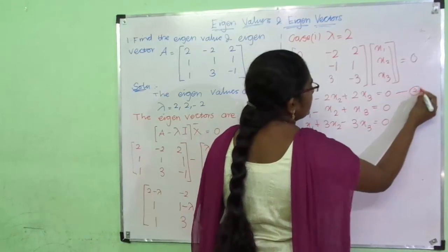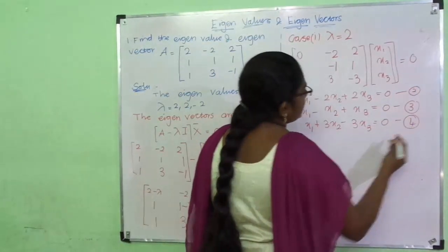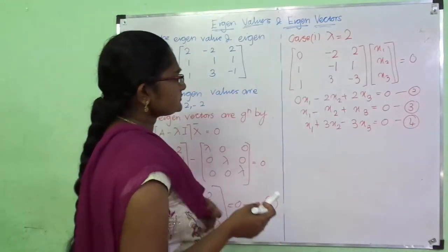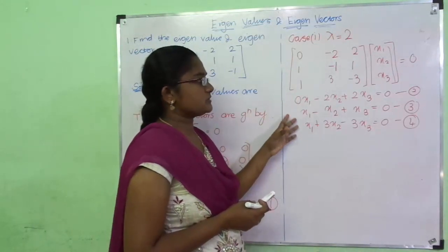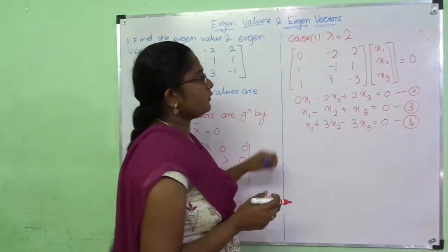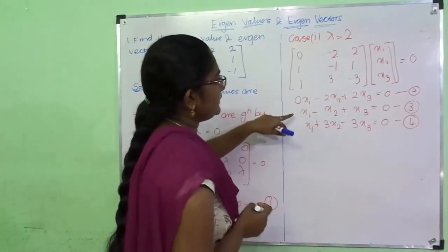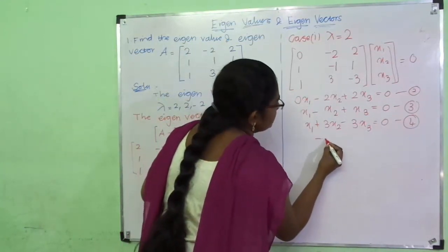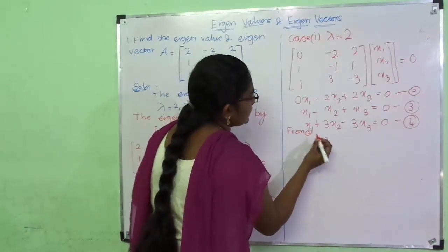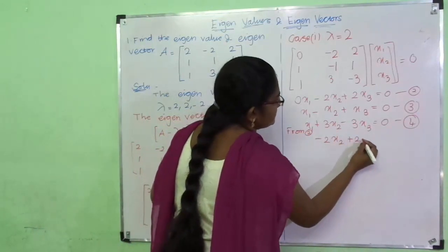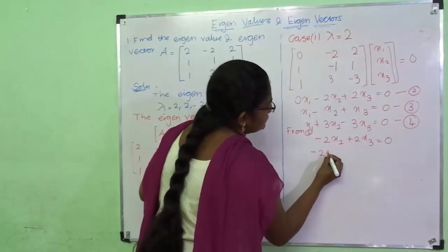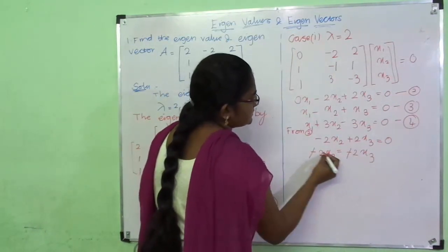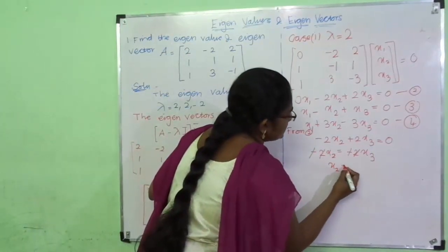Name these equations 2, 3, and 4. Now we solve these three equations to find x1, x2, x3, which will be the eigenvector. We can solve by rule of assumption or cross multiplication method. I am going to use the rule of assumption method here. Looking at equation 2, the coefficient of x1 is 0, so we write: minus 2·x2 plus 2·x3 = 0. Taking 2·x3 to the other side gives minus 2·x2 = minus 2·x3, so x2 = x3.